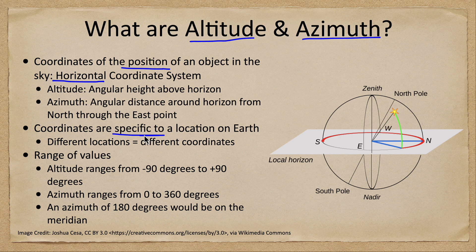These coordinates are specific to a location on Earth, and that means a different location would give you different coordinates. If we look at the sun as an example, in London, England, the sun could be above the horizon — it could be daytime there — and that would be a positive altitude. However, in the United States, maybe on the west coast like Los Angeles, the sun could still be below the horizon, and that would be a negative altitude. So you can have completely different values at different locations on Earth.